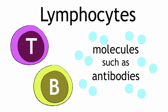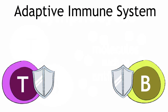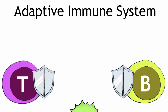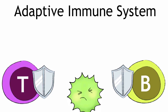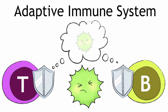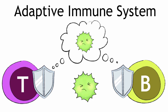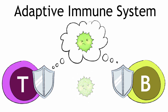T and B cells are members of the so-called adaptive immune system. Once these cells get activated, they are able to remember an infection, so that next time the same bacteria enters the body, it can be destroyed more rapidly.